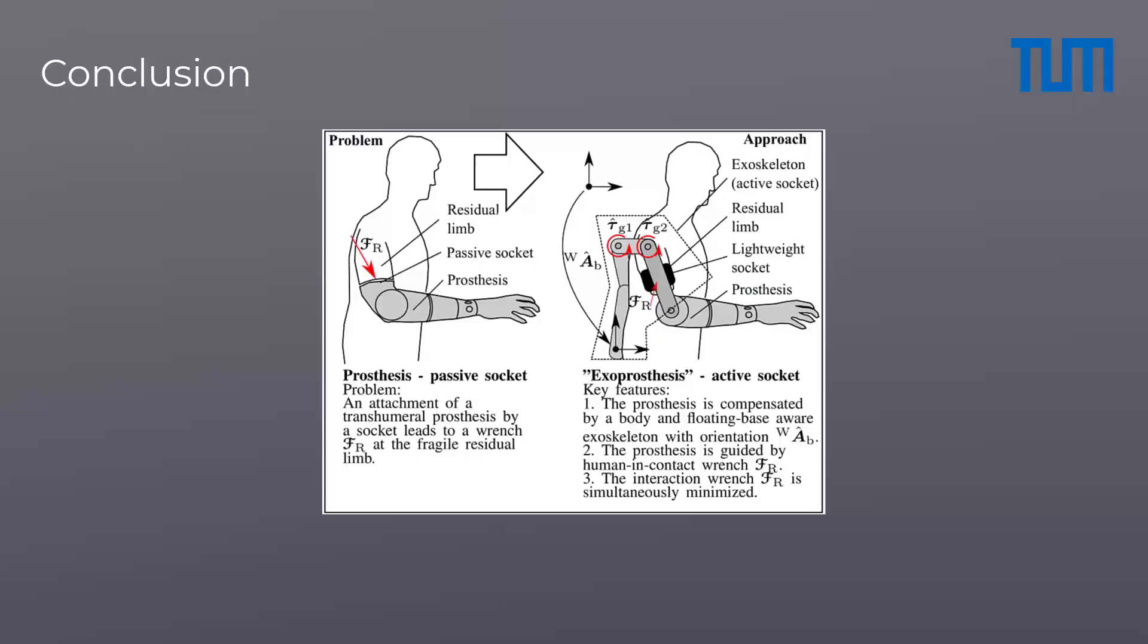In this work, we proposed an exoskeleton-based active socket concept for upper limb prosthesis. We provided a first mechatronics prototype and a control concept which were validated in the simulation and experiments. In addition to that, the wrenches at residual limb and pelvis were investigated by simulation and experiments.